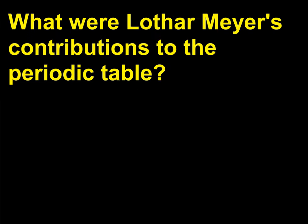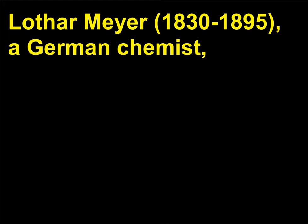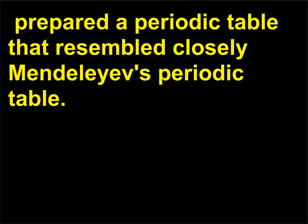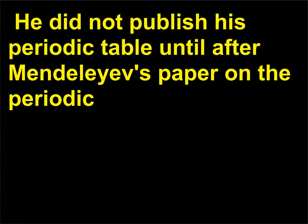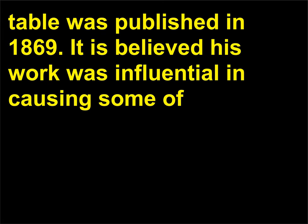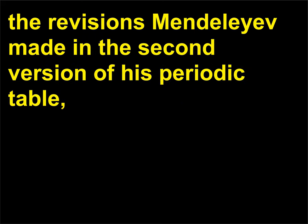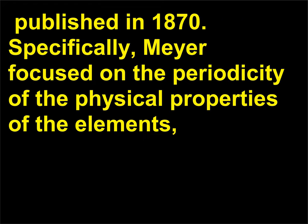What were Lothar Meyer's contributions to the periodic table? Lothar Meyer, 1830–1895, a German chemist, prepared a periodic table that closely resembled Mendeleev's periodic table. He did not publish his periodic table until after Mendeleev's paper on the periodic table was published in 1869. It is believed his work was influential in causing some of the revisions that Mendeleev made in the second version of his periodic table, published in 1870.